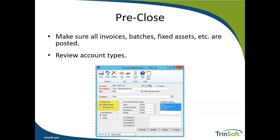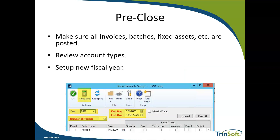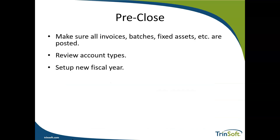If you do need to make an update to an account, you do that through the account maintenance window — you can see that highlighted in yellow, that's where you make that adjustment. The next thing we would encourage you to do before close is go ahead and set up the new fiscal year. Navigate through the fiscal period setup window, enter the start and end date for that year and the number of periods, then just calculate and generate your periods.